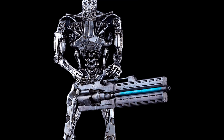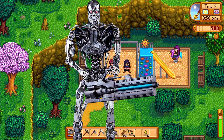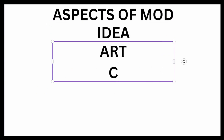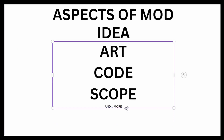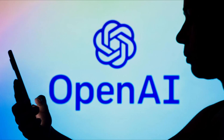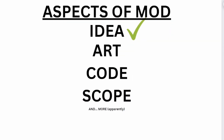Hey guys! In today's video, AI is going to be making a mod to Stardew Valley. There are a lot of aspects that go into making a mod: the idea, the art, the code, maintaining the scope of the mod, and so much more. And since ChatGPT very kindly already gave us the idea for our crop, we can safely say that we have the first one checked off. Moon Berries.